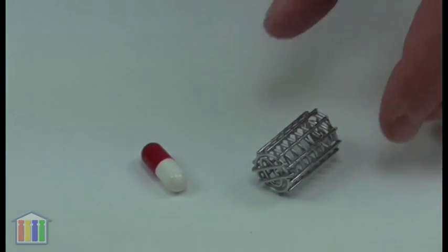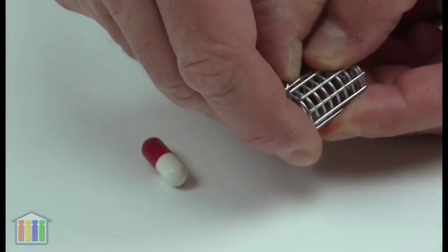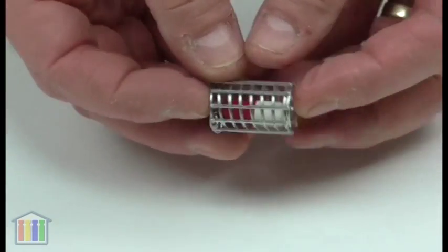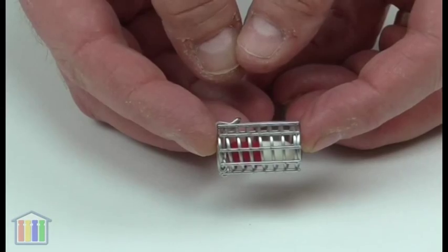The Japanese basket has a lid on the end which simply flicks open. The capsule fits inside and the lid is closed again, and the capsule is held inside the sinker like so.